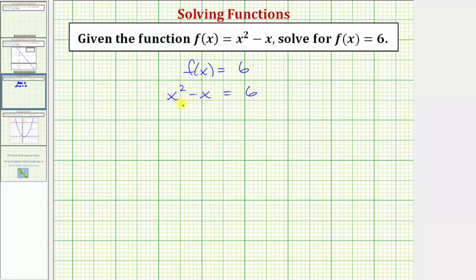Notice how here we have a quadratic equation, so let's set it equal to zero and see if we can solve by factoring. Let's subtract six on both sides of the equation. Simplifying, we have x squared minus x minus six equals zero.